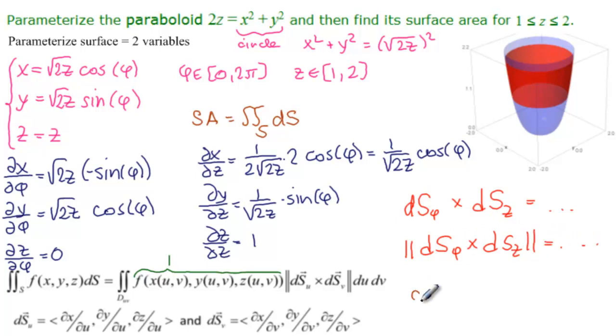And then our surface area will be from 1 to 2 on dz, and from 0 to 2 pi on d phi, whatever we get from here inside of there. So that's our plan. Let's go for it.